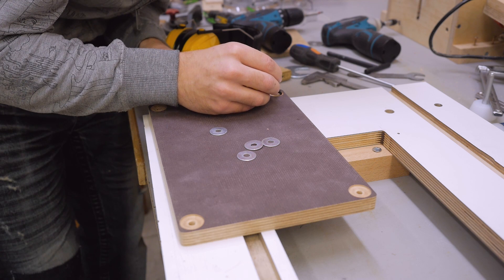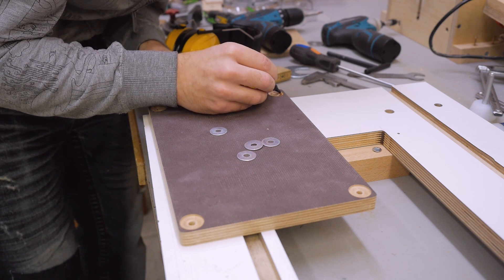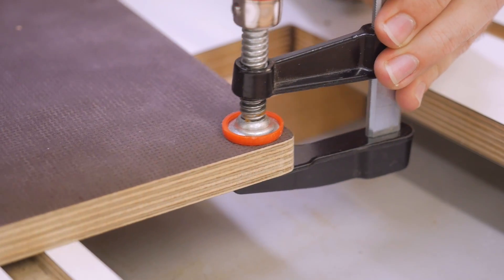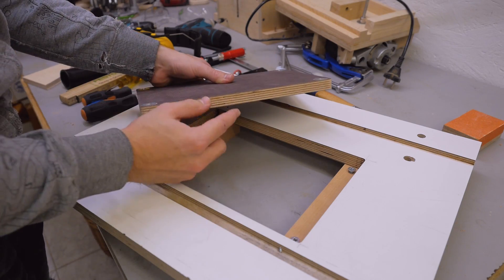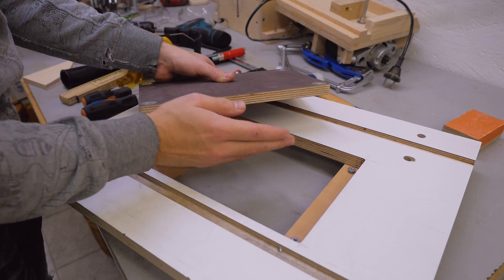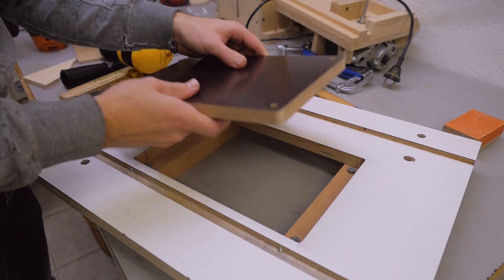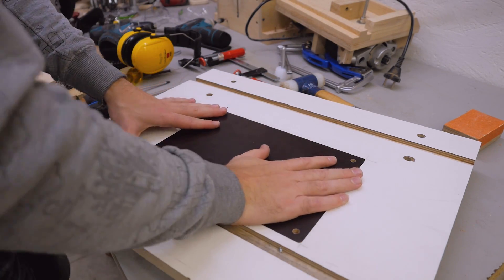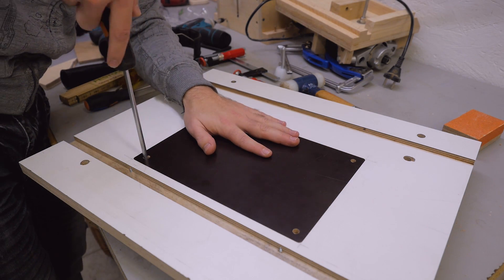Next I glued the washers with some superglue in place. Now I have a thick insert plate that should not bend under load with four metal on metal contact points which I can fine adjust from above the table.